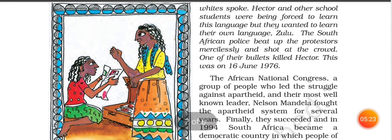When people protested against the South African police, the situation was very bad. They were shot. One bullet hit a boy named Hector, who was killed on 16 June 1976.